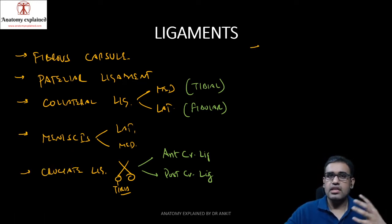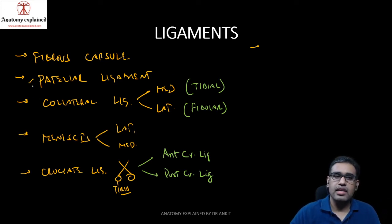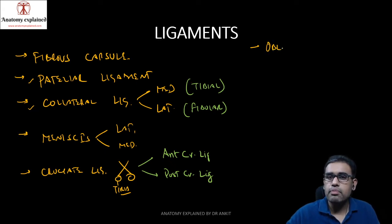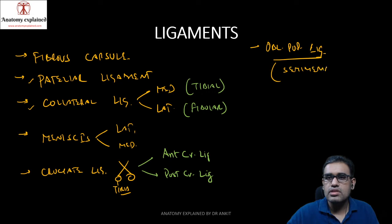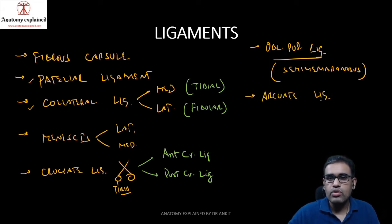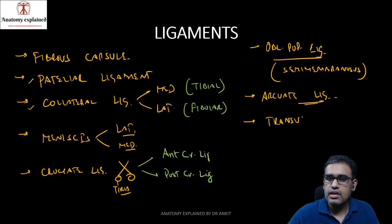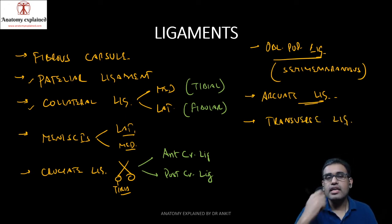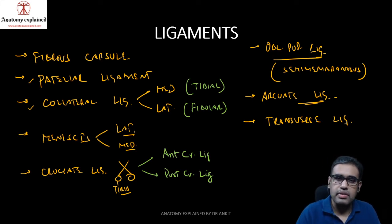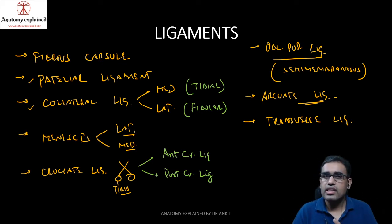The capsule is also strengthened by a few muscle condensations. Posteriorly, it is strengthened by the oblique popliteal ligament, which is a condensation or extension of the semimembranosus muscle of the hamstring compartment. We also have the arcuate ligament, which strengthens the joint from the posterior aspect. The anterior horns of both the medial and lateral menisci are connected anteriorly by the transverse ligament.